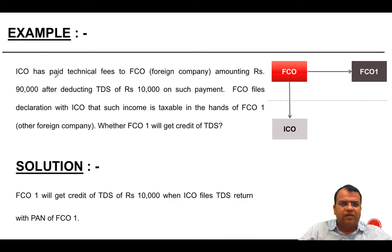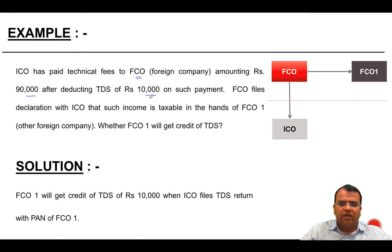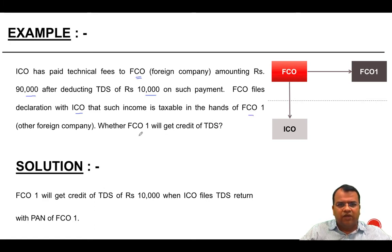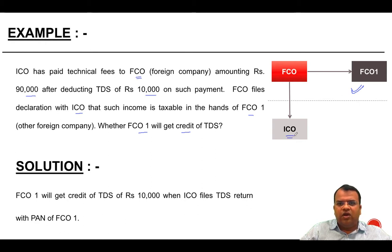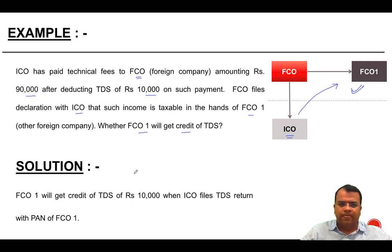Let's look at an example. ICO has paid technical fees to EFCO amounting to Rs. 90,000 after deducting TDS of 10,000 on such payment. EFCO files a declaration with ICO that such income is taxable in the hands of EFCO1, another foreign company. Whether EFCO1 will get the credit of TDS — EFCO1 will get the credit provided that when ICO files its TDS return, it mentions that the beneficiary is EFCO1 and TDS is in the name of EFCO1, i.e., ICO files TDS return with the PAN of EFCO1.